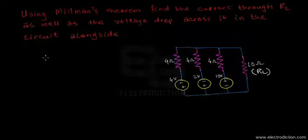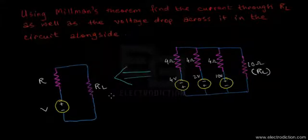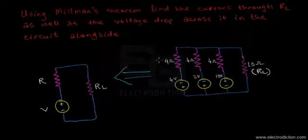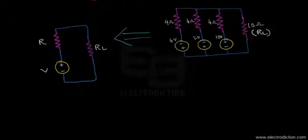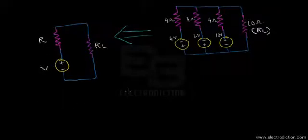We can reduce this network into the equivalent figure on the left. In order to do that, we need to find the values of the equivalent voltage V and equivalent resistance R. From Millman's theorem, we can find those values using the relevant relationships. Let's find the value of R first.